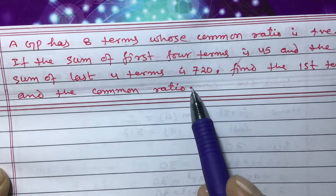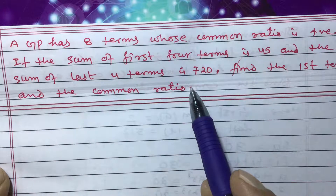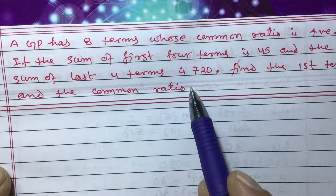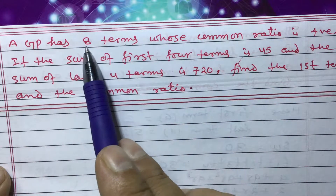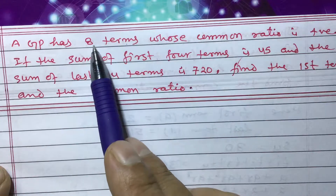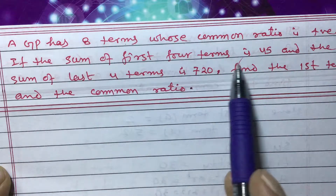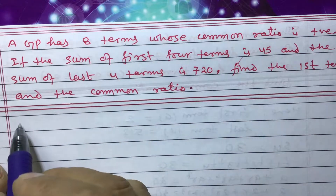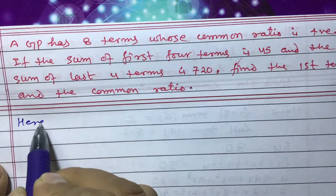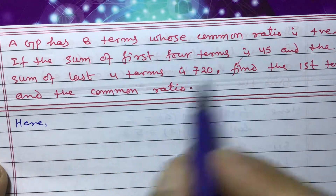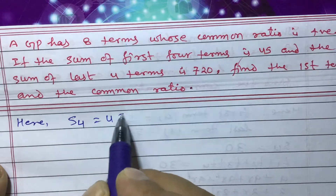This question is quite important — it may be asked as a five-mark type question. We have eight terms in total. Out of these eight terms, the sum of the first four terms is given as 45. So we have: S₄ = 45.